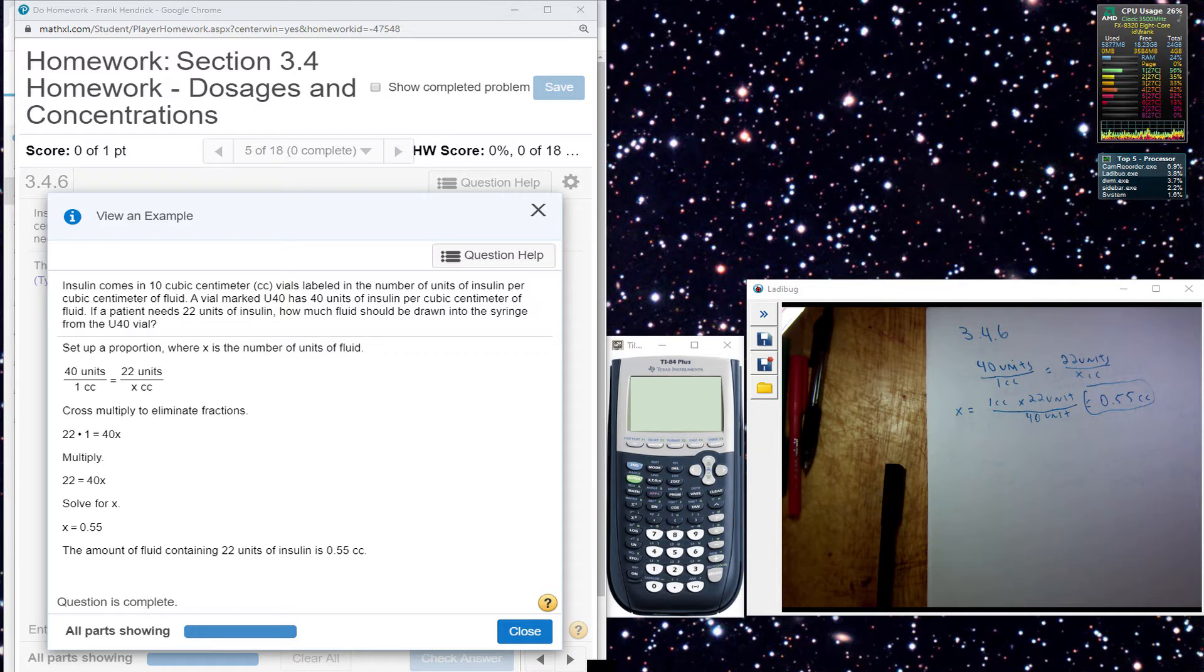Vial marked U40 has 40 units of insulin per cubic centimeter of fluid. If a person needs 22 units of insulin, how much fluid should be drawn into the syringe from the U40 vial?